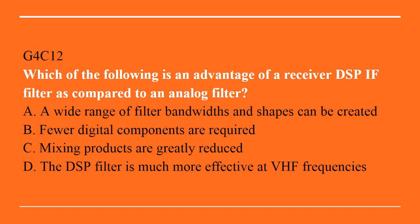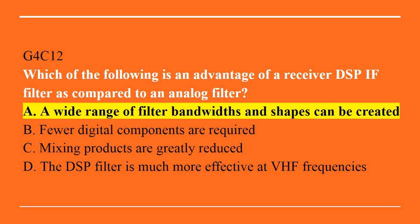G4C12: Which of the following is an advantage of a receiver DSP-IF filter as compared to an analog filter? A. A wide range of filter bandwidths and shapes can be created. B. Fewer digital components are required. C. Mixing products are greatly reduced. Or D. The DSP filter is much more effective at VHF frequencies. The correct answer is A. A wide range of filter bandwidths and shapes can be created.